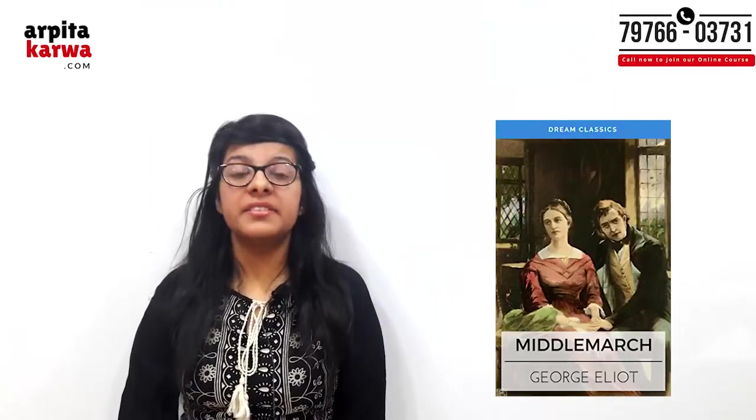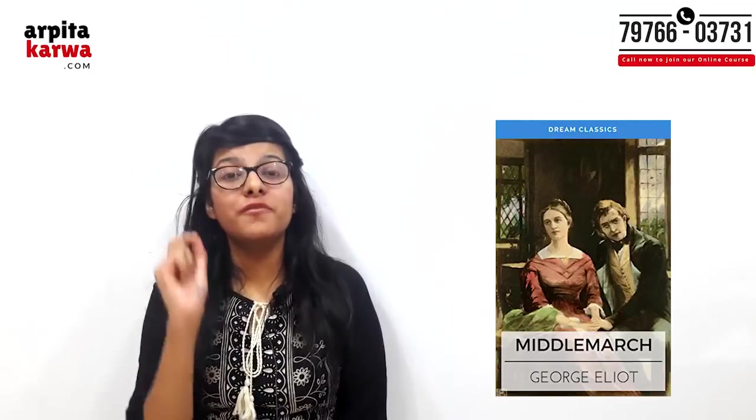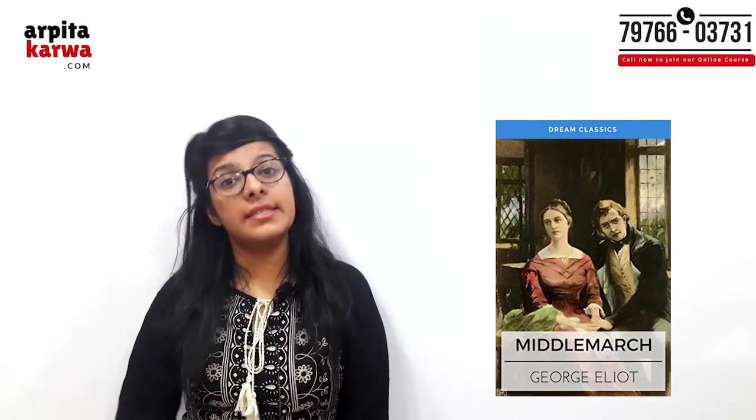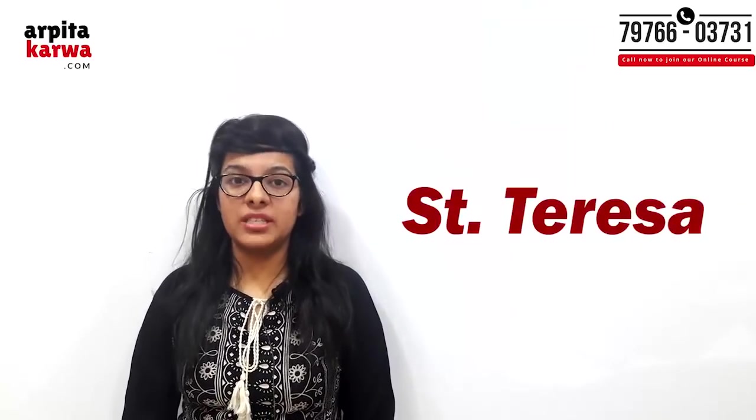The third most important Victorian novelist is George Eliot, whose real name is Mary Ann Evans. Her most important novel is Middlemarch, subtitled 'A Study of Provincial Life.' Virginia Woolf commented that it is 'one of the few English novels written for grown-up people.' The novel is set during the Reform Act of 1832. In its prelude there is a reference to Saint Teresa — this was a question in the January 2017 NET exam — and also a reference to Shakespeare's Twelfth Night: 'By swaggering I could never thrive, for the rain it raineth every day.'